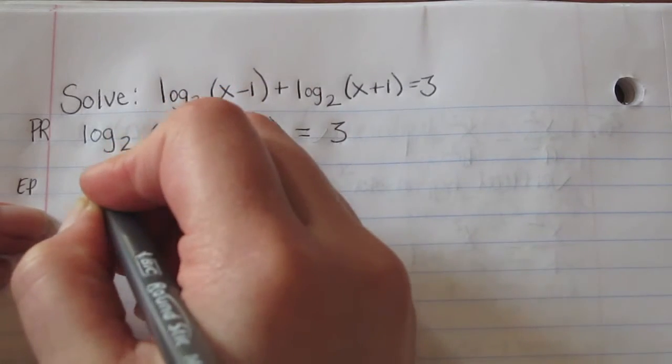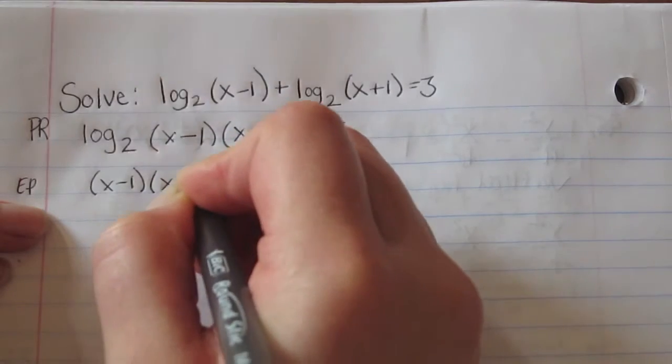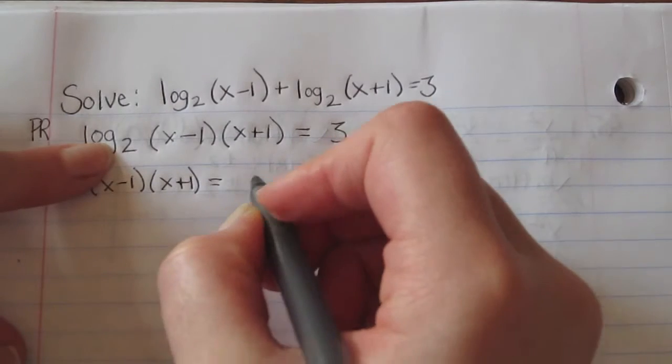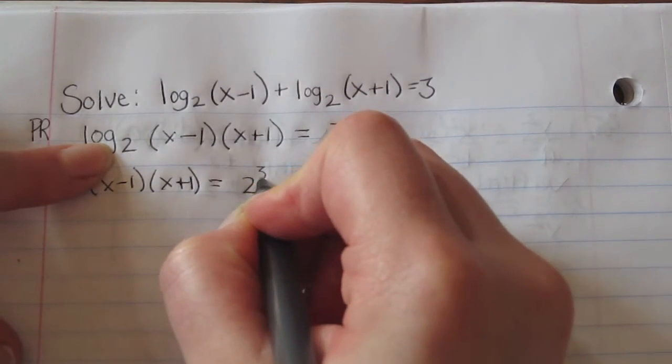So we'll have (x minus 1) times (x plus 1), and that's going to equal 2 to the power of 3, where 2 is the base and 3 is the exponent.